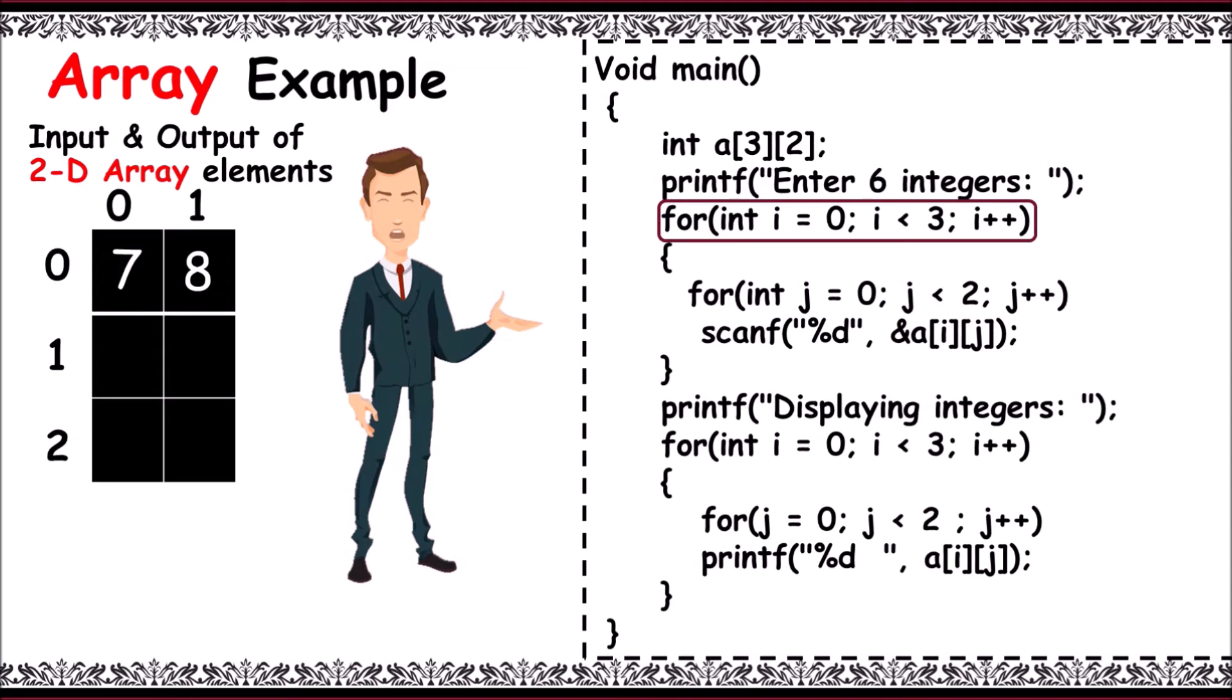Then, next row 1 with column from 0 again. Scanf accepts a[1][0] with 3, and again scanf accepts a[1][1] with 5. And again, row 2, the column gets updated now. The scanf accepts a[2][0] as 2, and the last column, scanf accepts a[2][1] as 4.